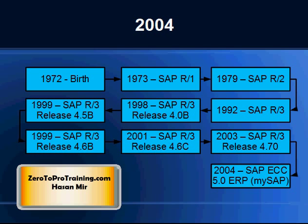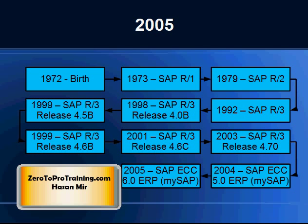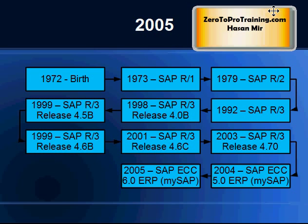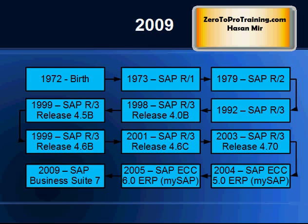In 2004, the product name was changed to SAP ECC. Version 5 was released in 2004, and version 6 in 2005. In 2009, the product was renamed as SAP Business Suite 7.